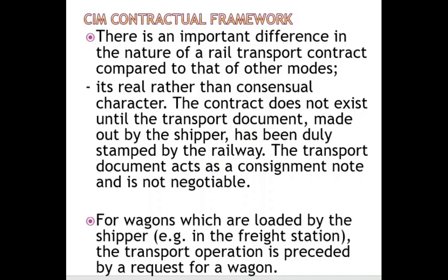In rail transport, the contract does not exist until the transport document made out by the shipper has been duly stamped by the railway. The transport document acts as a consignment note and it is not negotiable. There is no contract unless the shipper completes the transport document and has it stamped and signed by the carrier — the railway. Without that document, which is not negotiable, there is no contract.